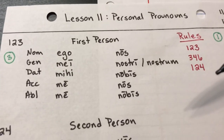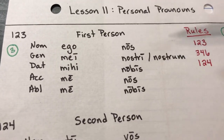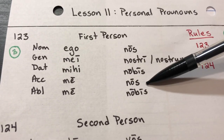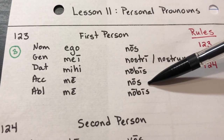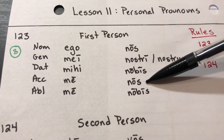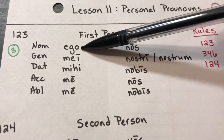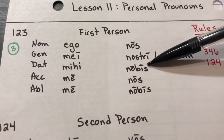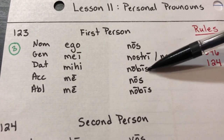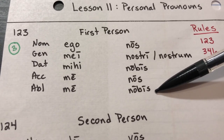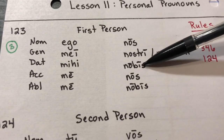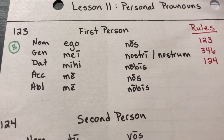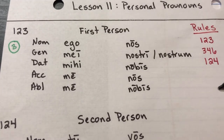We looked for things that seemed familiar. Someone mentioned that the nominative and the accusative are the same, which we've found in a number of our declensions. Over in the plural they also match up. We noticed the -os, -is pattern, which is familiar from the second declension. We also noticed that mei repeats itself.